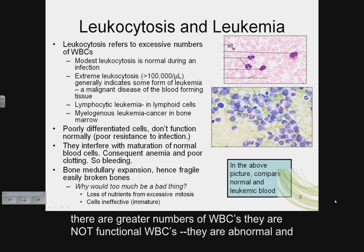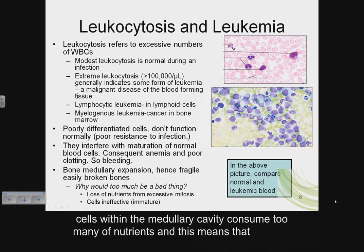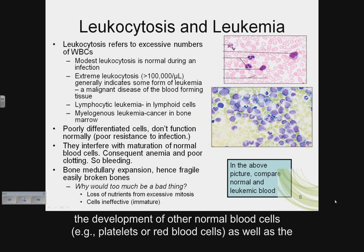The rate of production of these abnormal white blood cells becomes so great that the medullary cavity within the bone expands to accommodate this rapidly dividing population. Although there are greater numbers of white blood cells, they are not functional — they are abnormal and released in a poorly differentiated state. Additionally, the cancerous cells consume too many nutrients, impeding development of other normal blood cells such as platelets and red blood cells.